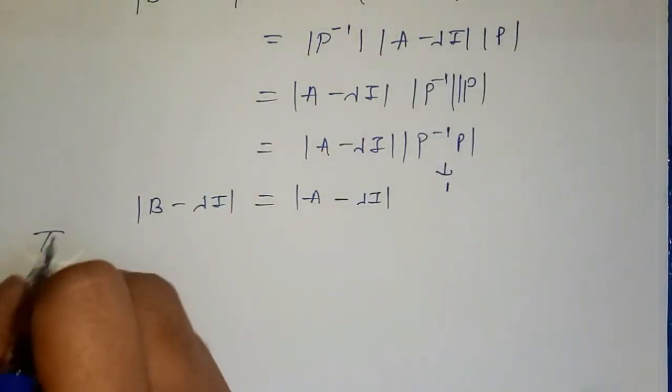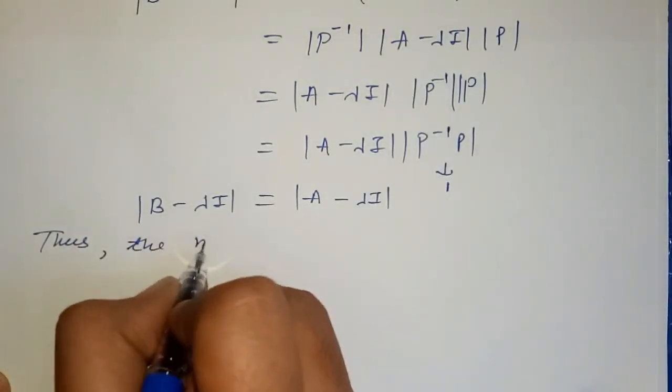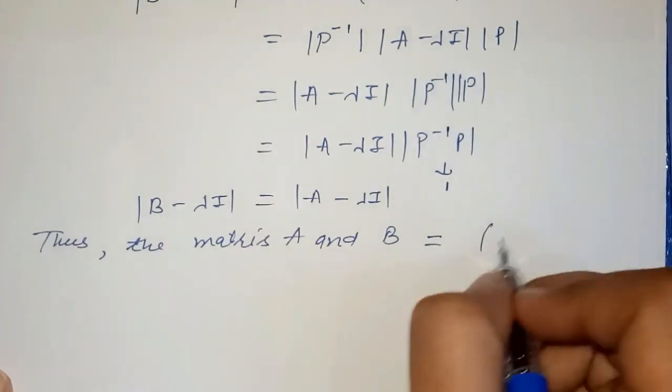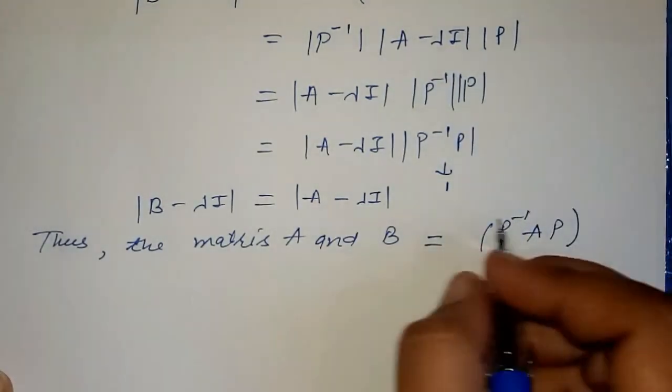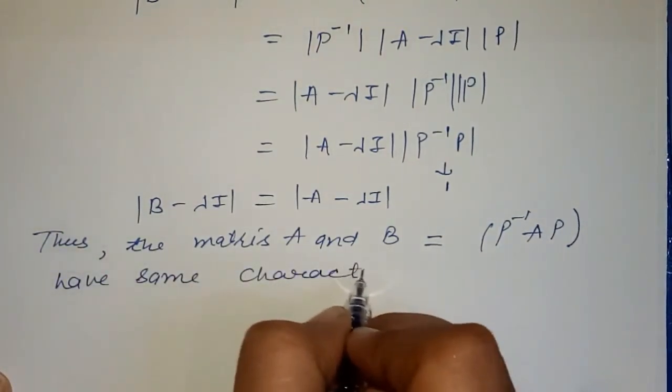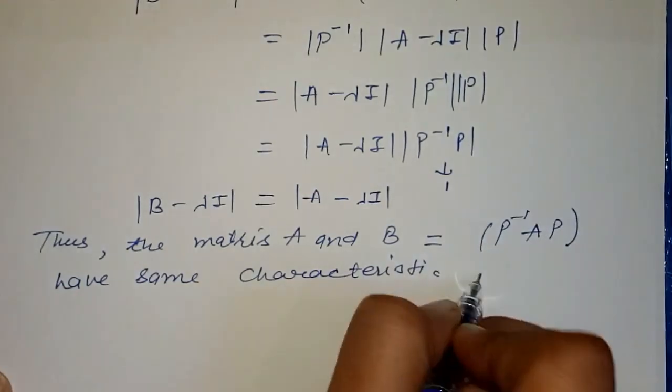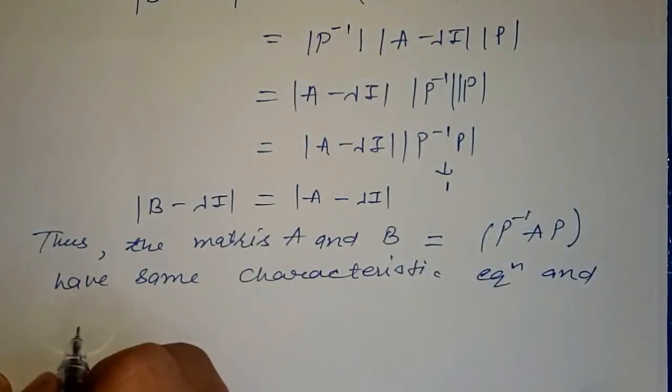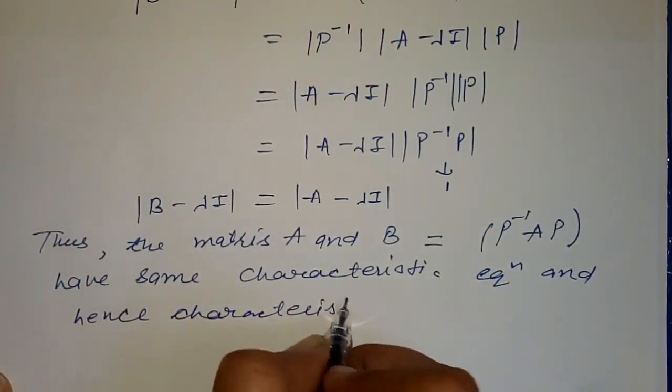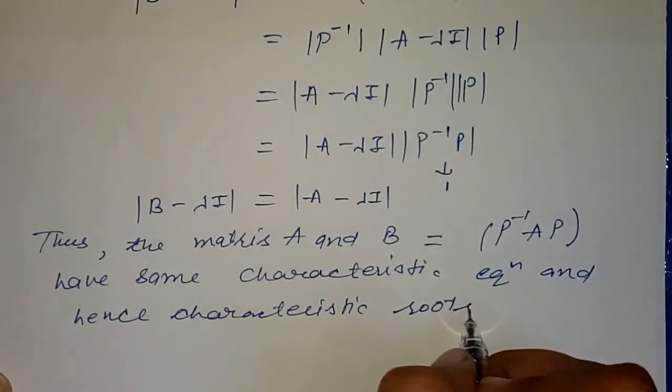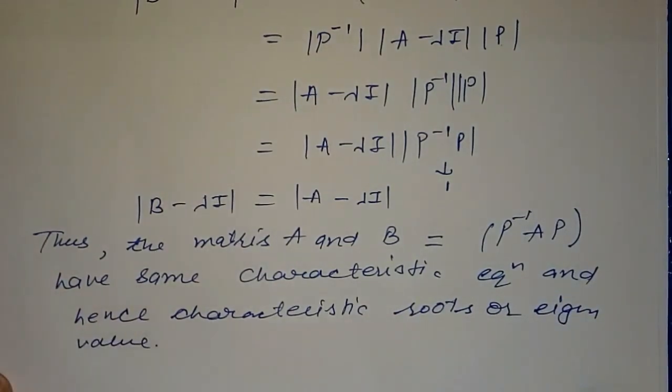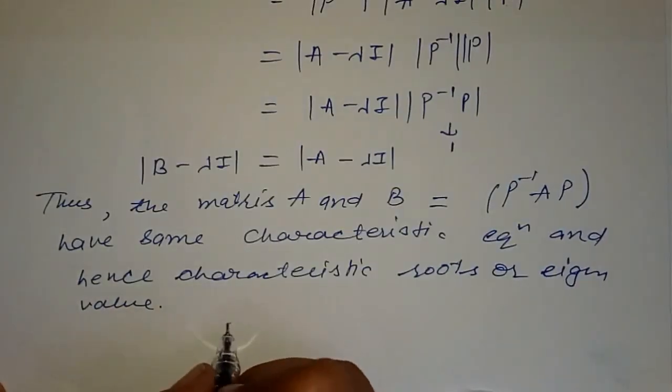Thus, the matrices A and B equals P inverse AP have the same characteristic equation and hence the same characteristic roots or eigenvalues. The correct answer is D.